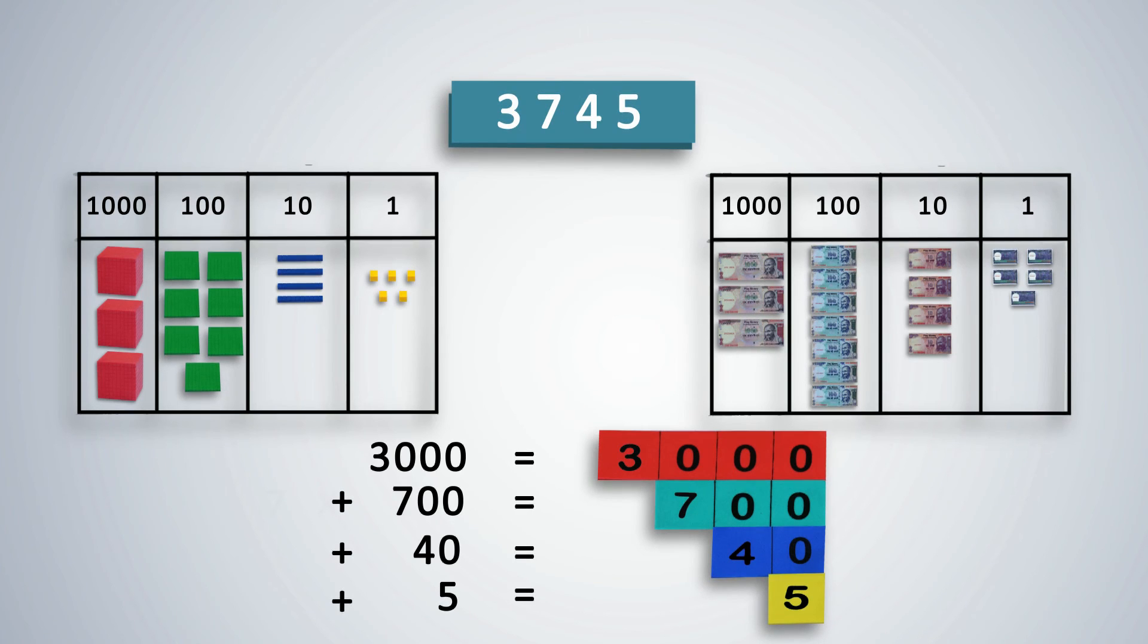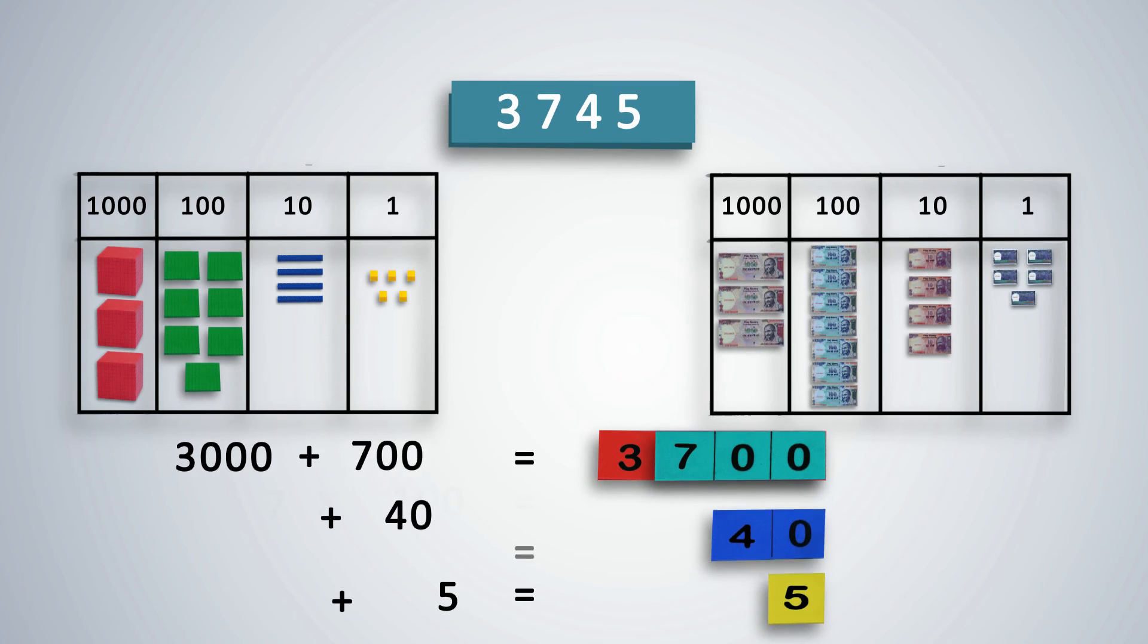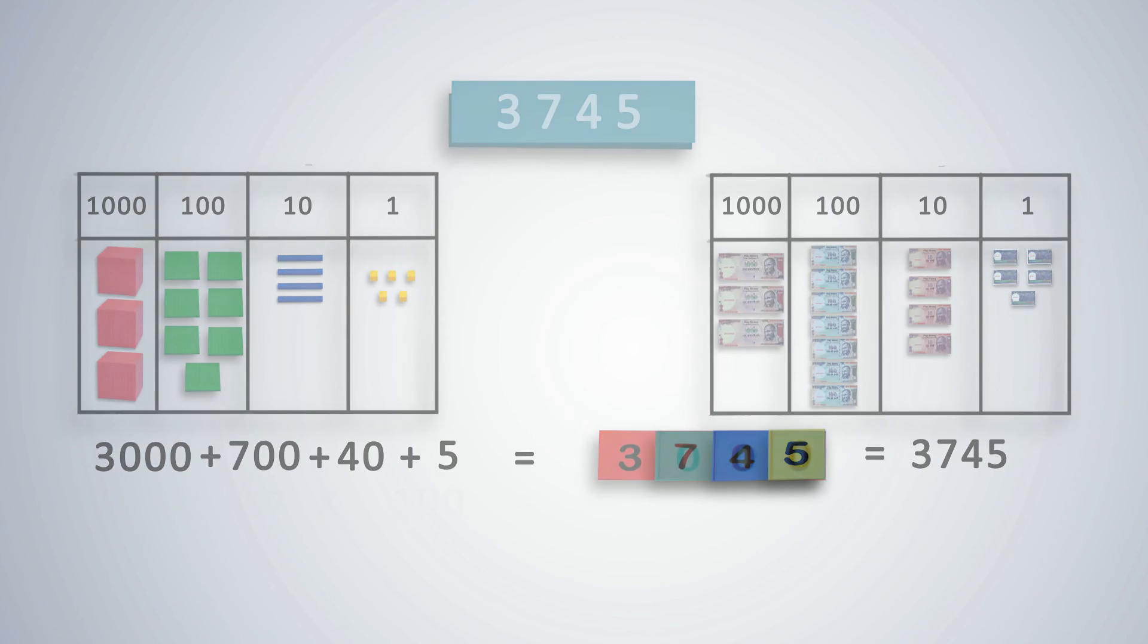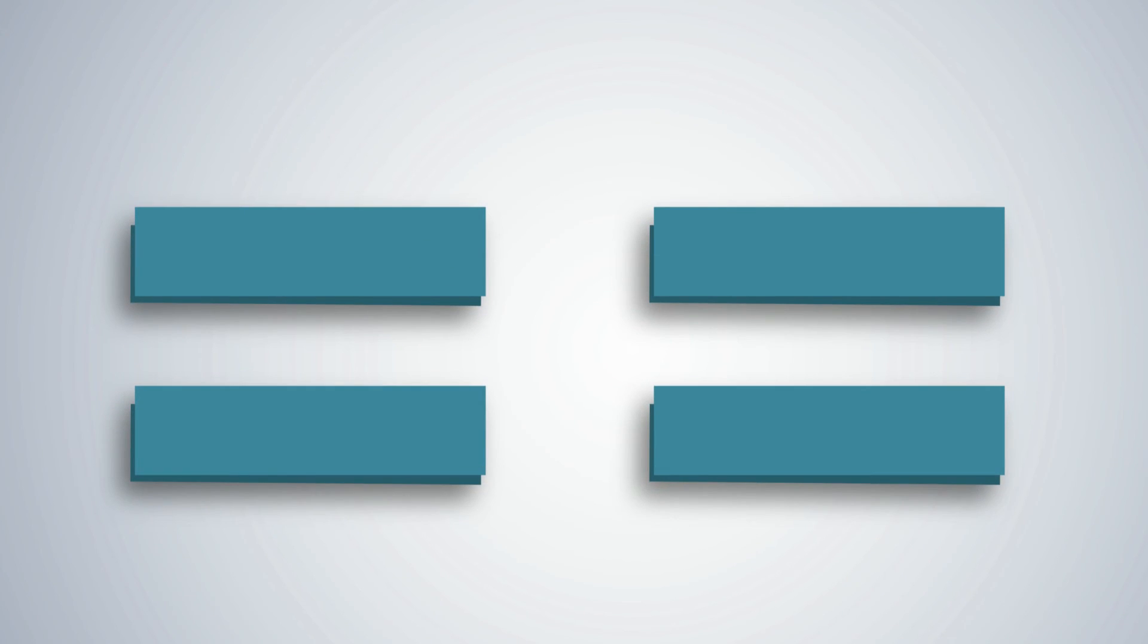Third step, rearrange the strips. Place green over red, next blue over green, and finally yellow over blue, all aligned to the right. We can now see the contracted form of the number. Till they master the concept, let students follow these steps and practice first with blocks or play money or abacus, then represent the numbers with place value strips.